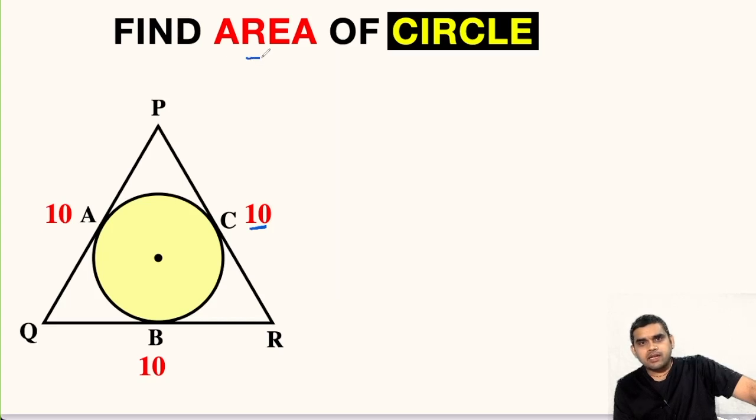We know that the area of any circle is given by the formula pi times square of its radius. So our main focus will be to find the value of r. I will show you two methods by which we can find area of this circle. The first method is without using the concepts of trigonometry.